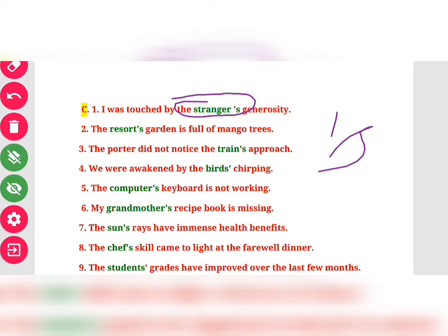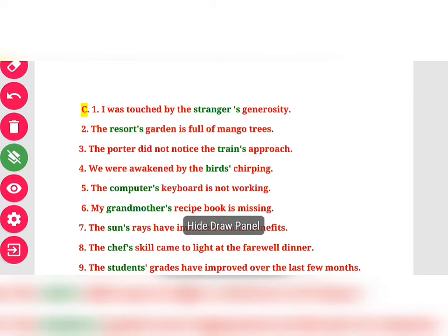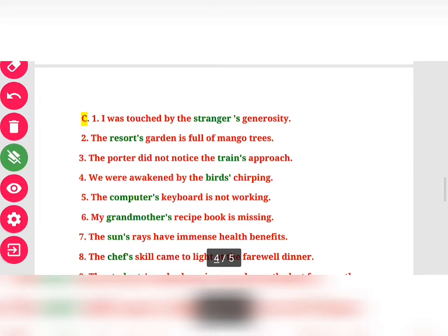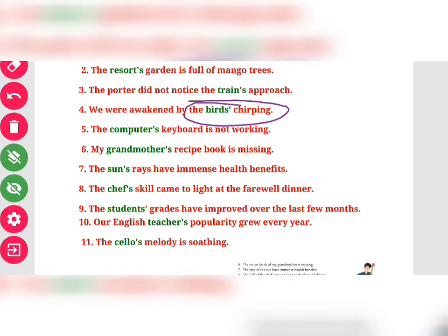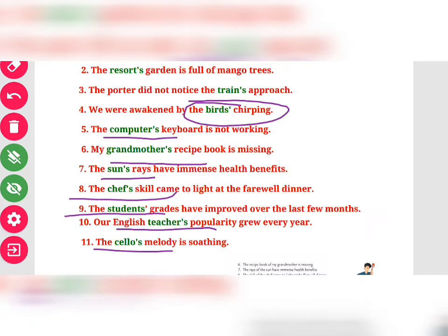Third: "The porter did not notice the train's approach" — apostrophe will be in 'train's'. Fourth: "We were awakened by the bird's chirping." Fifth: "The computer's keyboard." Sixth: "My grandmother's recipe." Seventh: "The sun's rays." Eighth: "The chef's skill." Ninth: "The students' grades." Tenth: "Our English teacher's popularity." Eleventh: "The silo's melody." These are the apostrophe placements for Exercise C.